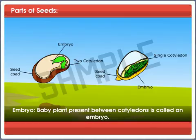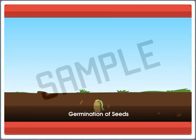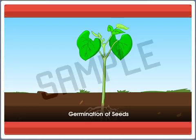C. Embryo: The baby plant present between cotyledons is called the embryo. Seeds germinate to give rise to a new plant. The process of development of a seed into a seedling or plant is called germination.